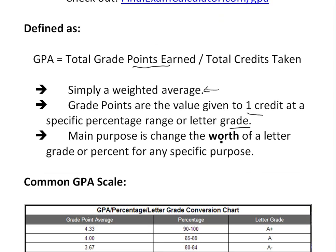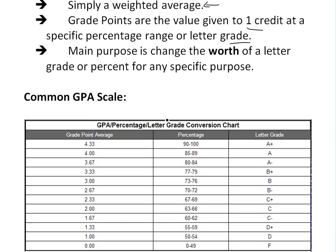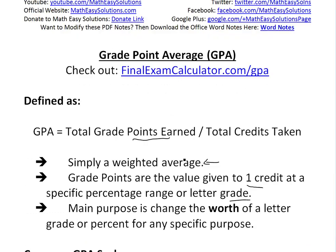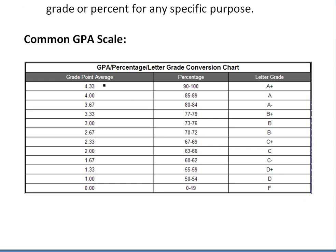The main purpose is to change the worth of a letter grade or percentage for any specific purpose. On this common GPA scale from our calculator, if you got between 90 and 100 — say 93, 98, or 100 — that is worth 4.33, and that's an A+. If you got between 85 and 89, that's worth 4.0. So we're changing the value from the basic linear 0–100% scale to something like this.